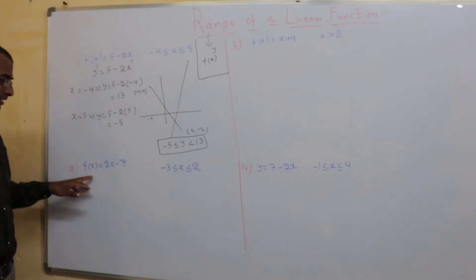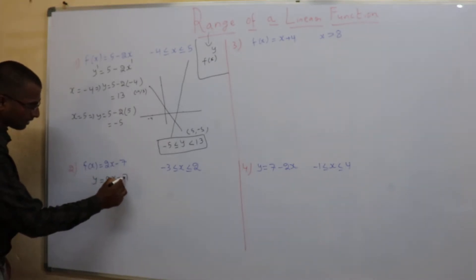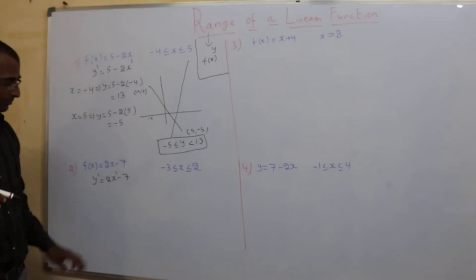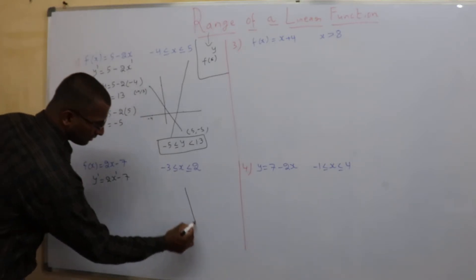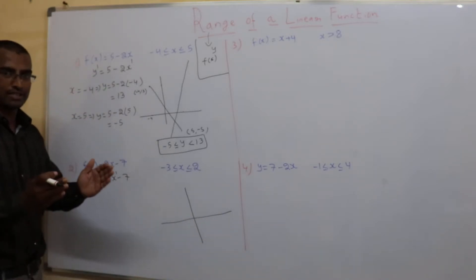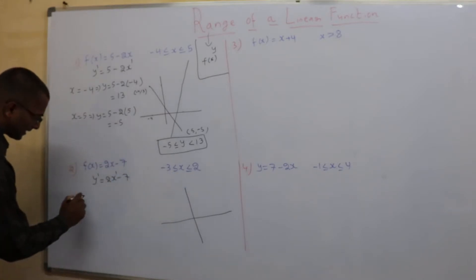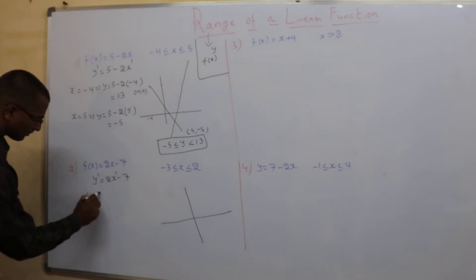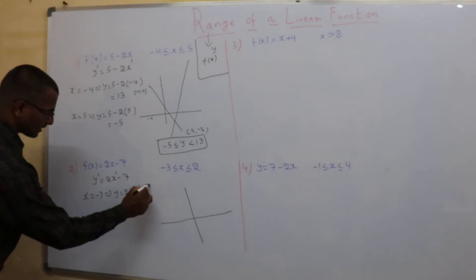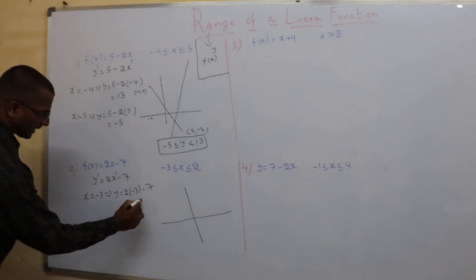One more example. Consider y = 2x minus 7. The power on x is 1, so this will result in a straight line. The straight line will go on, so I need to restrict the values of y, which is decided by the domain. When x is minus 3, replace x by minus 3: that gives minus 6 minus 7, which is minus 13.